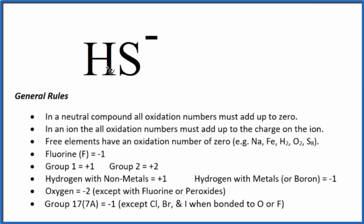To find the oxidation numbers for each element in HS minus — this is the hydrogen sulfide ion — we'll use these rules here. First off, we have an ion; we can tell that there's a negative charge after it, that makes it an ion. So we have an ion, and all the oxidation numbers add up to the charge on the ion. So all the oxidation numbers on the hydrogen and the sulfur, we add those up, we've got to get negative one.